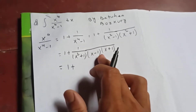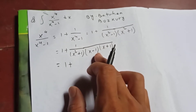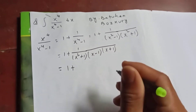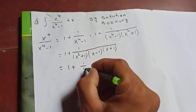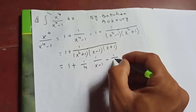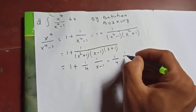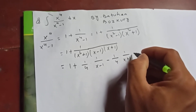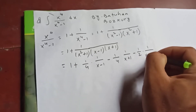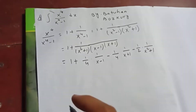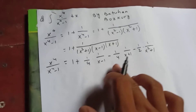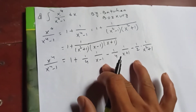For this we use partial fractions. Applying partial fraction decomposition, we get: one-fourth times 1 over x minus 1, minus one-fourth times 1 over x plus 1, minus one-half times 1 over x squared plus 1. So our integrand can be simplified like this, and now it is easier to integrate.